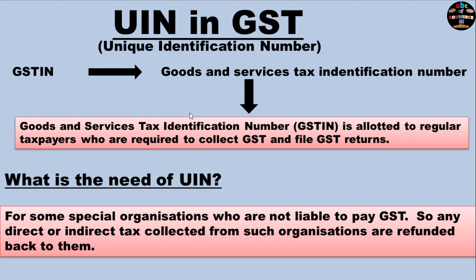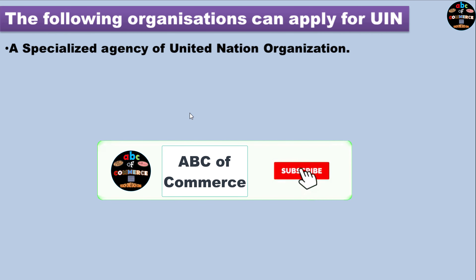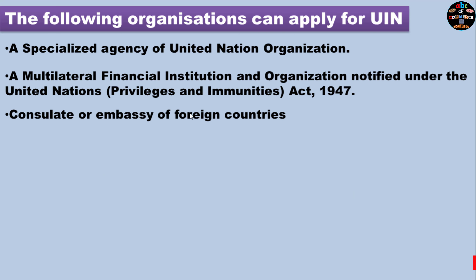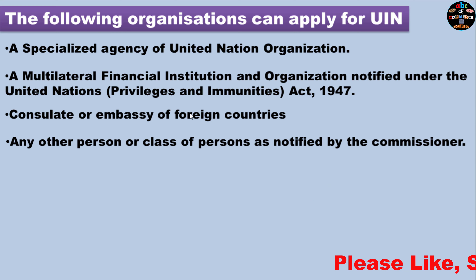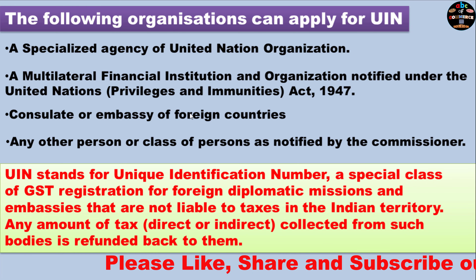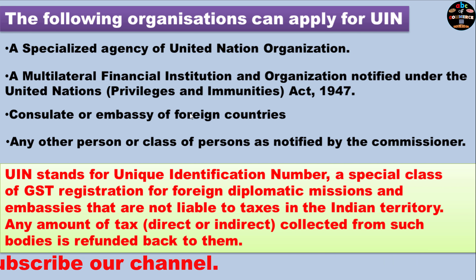We cannot allot a GSTIN to these entities because they are non-residents and are only providing their services in India. These organizations include: specialized agencies of United Nations organizations, multilateral financial institutions and organizations, foreign embassies, and any other persons as notified. UIN is a Unique Identification Number — a special class of GST registration specifically for foreign embassies and similar entities that do not have to collect the taxes applicable in India.